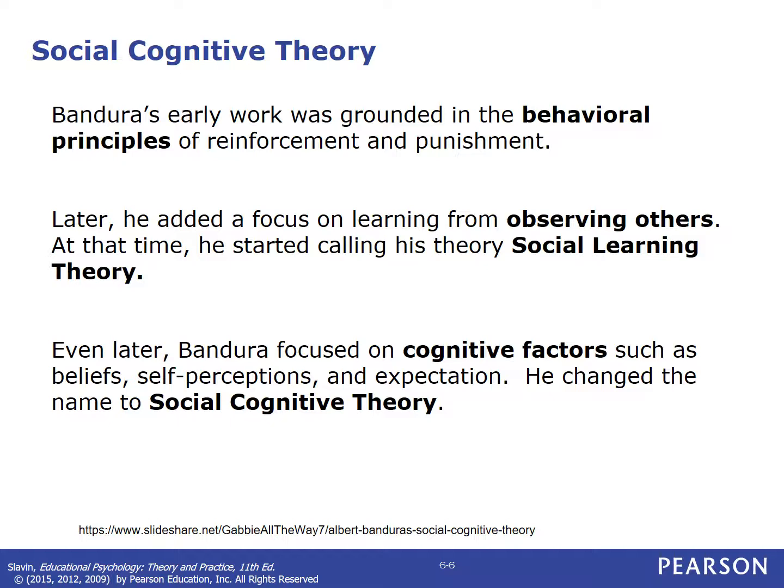He said human beings are not just operating with rewards and punishments — we sometimes do things just because we watch others do it and it seems pleasing and effective. So maybe in a sense it's rewarding, but not for a physical reward necessarily. Even later, he focused on cognitive factors such as beliefs, self-perceptions and expectations.